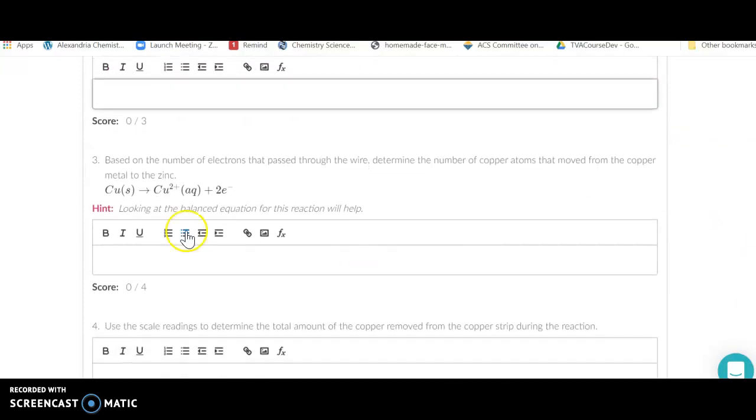Now we don't want electrons, we want copper. If we look at our equation for this reaction, we realize that we are going to use up two electrons or lose two electrons for every one mole of copper. So you're going to take your number of electrons and realize there's one mole of copper for every two moles of electrons.